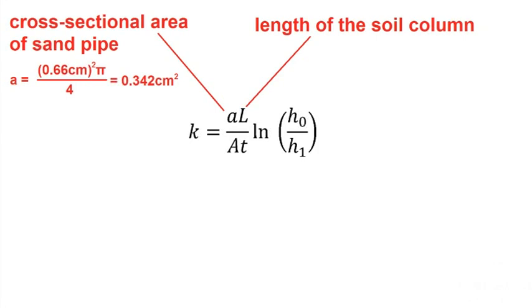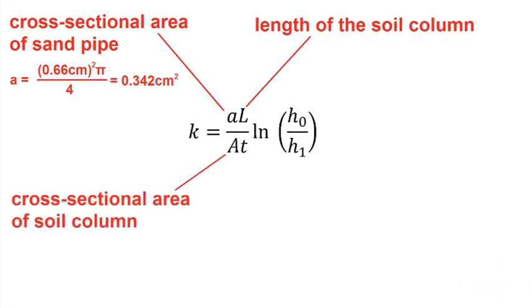L is the length of the soil column. In our case, the length of the column is 16 centimeters. Uppercase A is the cross-sectional area of the soil column. In our case, the diameter of the cylinder is 6.3 centimeters. Therefore, the cross-sectional area is 31.2 square centimeters.